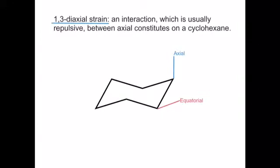Here I'm just demonstrating that the axial constituent groups will come straight out from the top of a carbon, but equatorial groups will come out from the side.